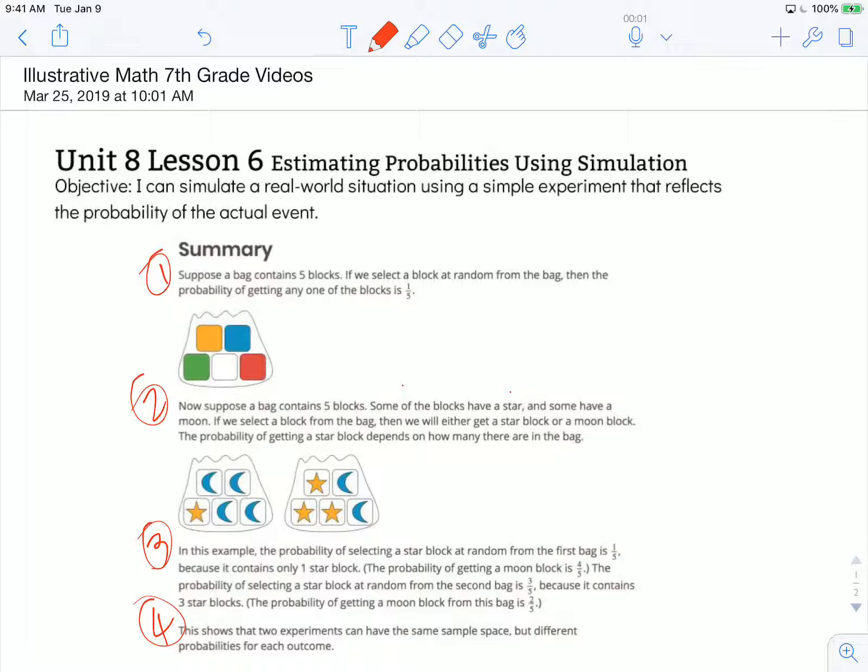Paragraph two, now suppose a bag contains five blocks. Some of the blocks have a star and some have a moon. If we select a block from a bag, then we'll either get a star block or a moon block. The probability of getting a star block depends on how many there are in the bag.